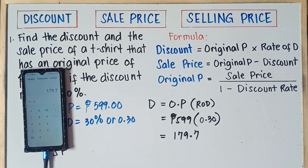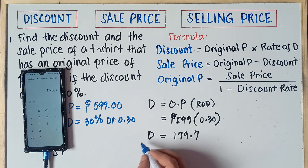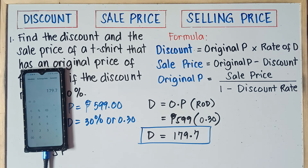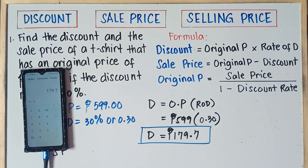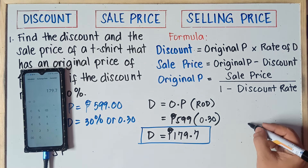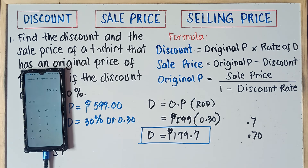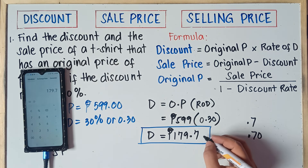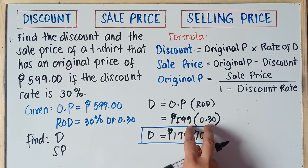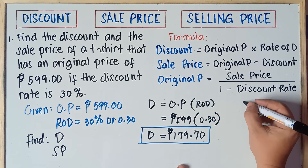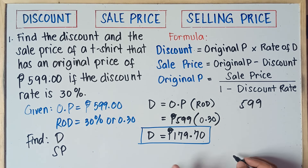So the discount is 179.70 pesos. Note that 0.7 and 0.70 are just the same, so you can write either. Now, to multiply this manually without using your calculator — because some teachers will not allow you to use a calculator — you need to multiply 599 × 0.30 by hand.